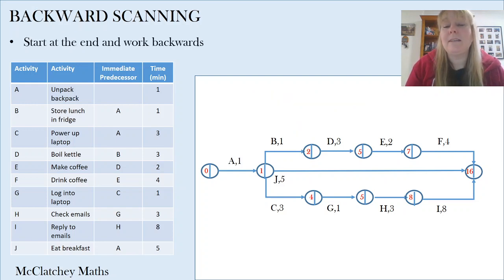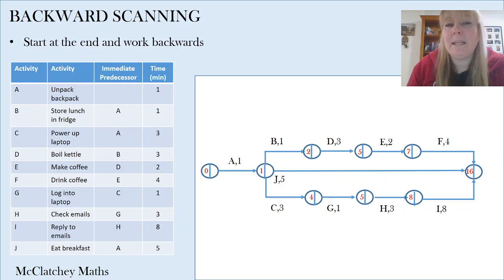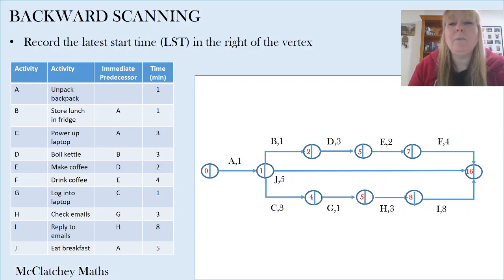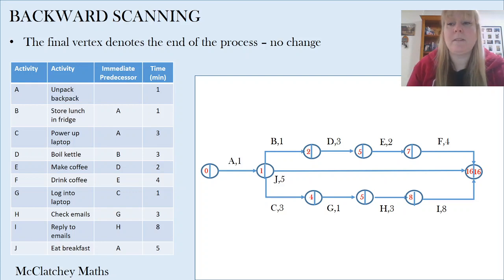Backwards scanning starts at the end of the network on the right-hand side and works its way backwards to the left, taking away from each vertex the activity time each time. This will make more sense once we get started. We're going to record our latest start time in the right-hand side of each vertex. At the end of our process that's not going to change — the latest we can start the next activity would be at the 16-minute mark.